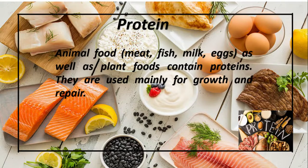Next is protein. Animal foods such as fish, eggs, milk, and meat, as well as plant foods, contain proteins. They are used mainly for the growth and repair of our body.